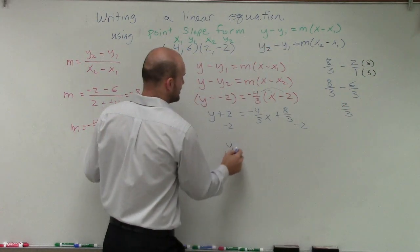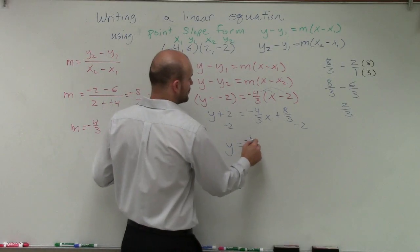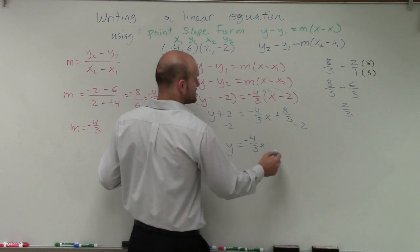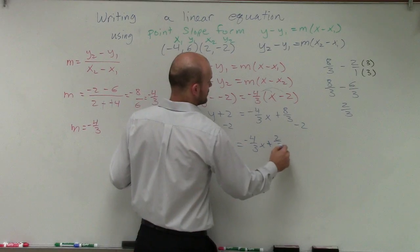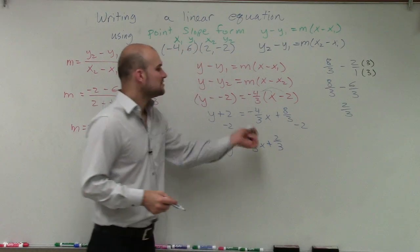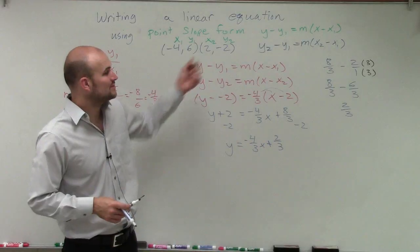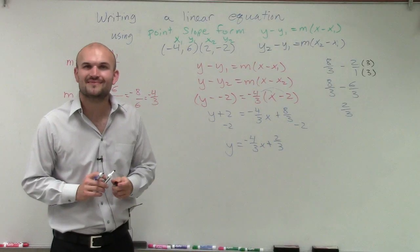So therefore, my final equation in slope-intercept form is y equals negative 4 thirds x plus 2 thirds. So there you go, ladies and gentlemen. That is how you write an equation between two points in slope-intercept form. Thanks.